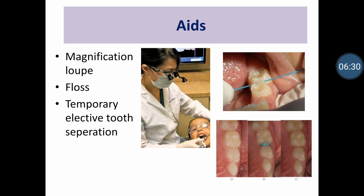Floss is used to check proximal contacts, contours, and overhanging restorations. It is passed from the occlusal embrasure to the gingival embrasure interproximally. If any fraying of the floss is seen, it indicates presence of proximal caries, overhanging restorations, or improper contacts and contours. If there is no access to the interproximal enamel surface to assess smooth surface caries, we can selectively separate the tooth using separators to visualize the surface. These are the three major aids used along with visual-tactile methods to diagnose caries.